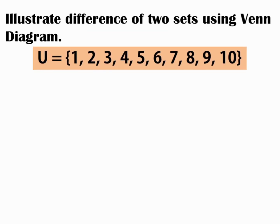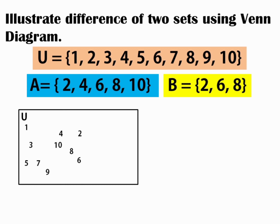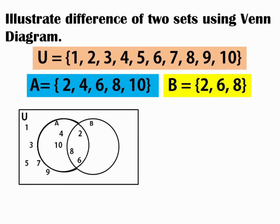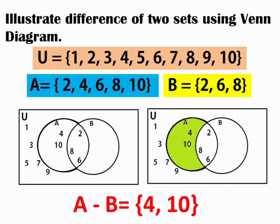Next example: if U is equal to {1, 2, 3, 4, 5, 6, 7, 8, 9, 10}, A is equal to {2, 4, 6, 8, 10}, and B is equal to {2, 6, 8}, find A minus B. First, we represent the universal set using the rectangle. Then we represent set A using a circle with elements 2, 4, 6, 8, 10, and set B with elements 2, 6, 8. To illustrate in a Venn diagram, the shaded region will be our answer. A minus B is equal to {4, 10}.